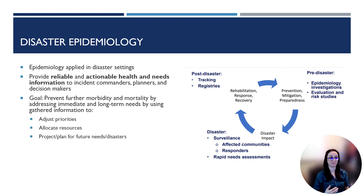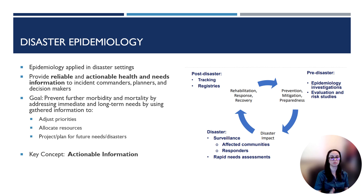The goal is to prevent further morbidity and mortality. The information and data that we're providing can help with adjusting priorities, allocation of resources, or projecting or planning for the future. That key distinguishing factor is actionable information — the information that we're providing will be used in real time to inform the response. It's not just putting out studies to help build up the literature base; it's going to be used during the response.